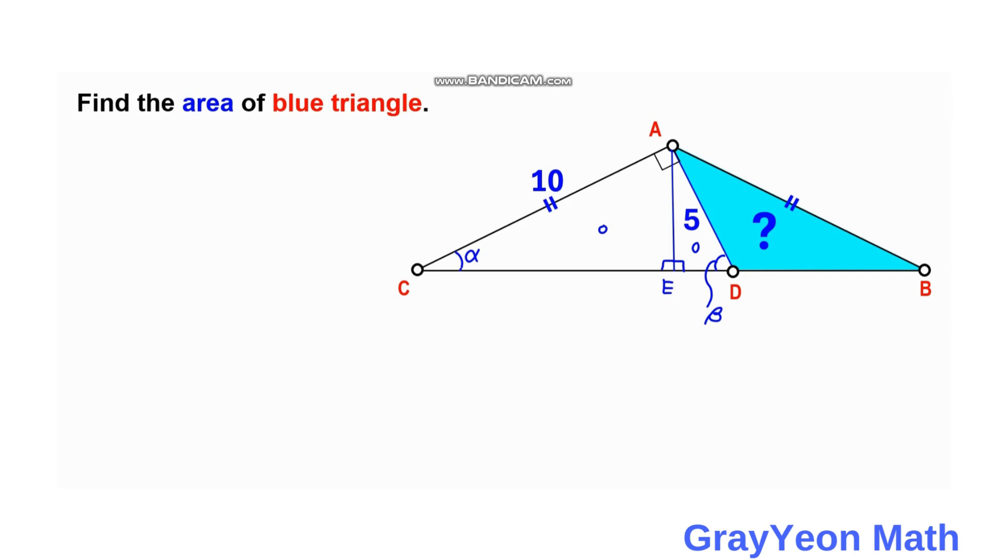If this angle at C is already alpha, then this should be beta to complement. And since this is 90 degrees at A, this is alpha. Therefore, these two triangles by angle-angle similarity theorem are actually similar triangles: ACE and AED.